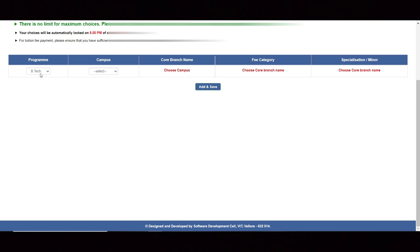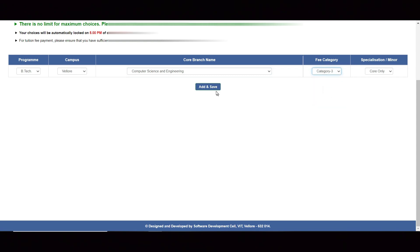Coming to choice filling - of course you are from B.Tech program, only one choice is there. First choose campus, Vellore based on your preference. Then choose the branch name. Coming to core branch name - what branch you want to take, so CSE, and that fee category.